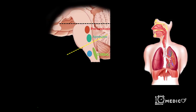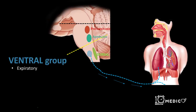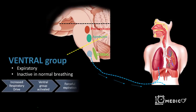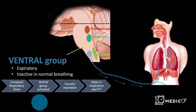The ventral group of neurons is mainly concerned with expiration. They supply expiratory muscles like the abdominal muscles and internal intercostals. They are inactive during normal breathing, but whenever there is an increased respiratory drive, these are activated and result in forceful expiration. There is also a theory which suggests that the ventral group contains two different groups of neurons — one concerned with expiration and the other with inspiration.